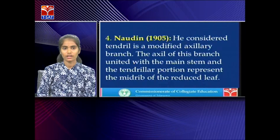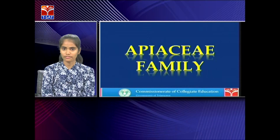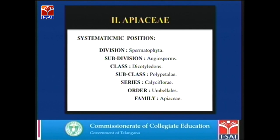The Cucurbitaceae family ends and we start with our second family, Apaceae, also commonly known as Umbelliferae. The systematic position: division Spermatophyta, subdivision Angiosperms, class Dicotyledons, subclass Polypetalae, series Calciflorae, order Umbellales, family Apaceae.